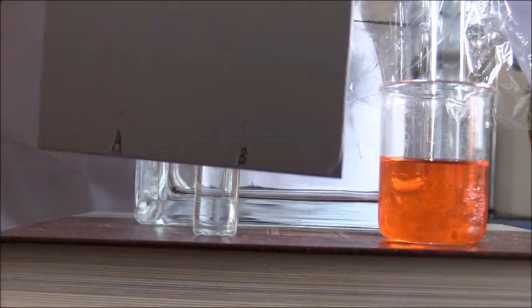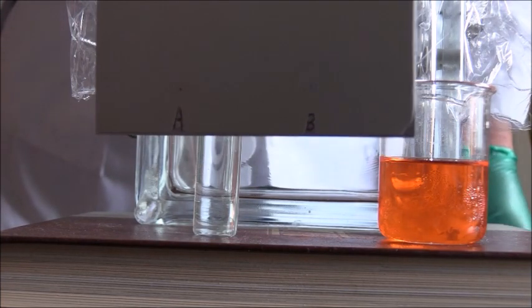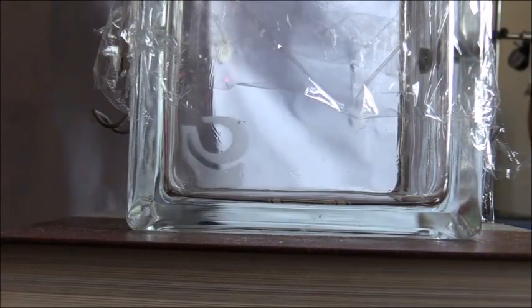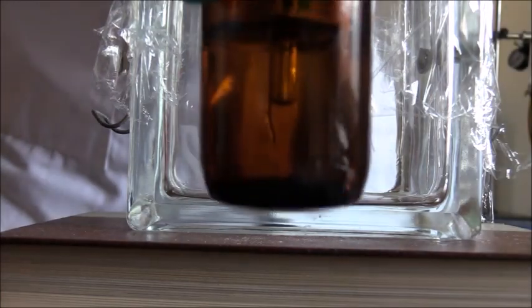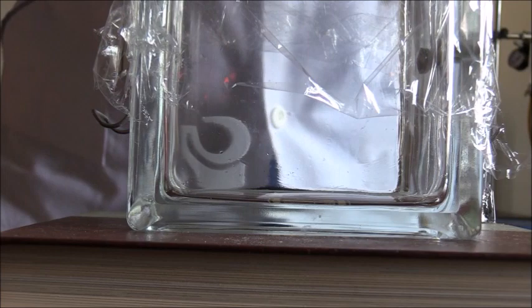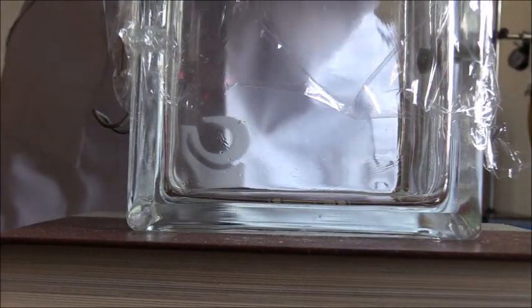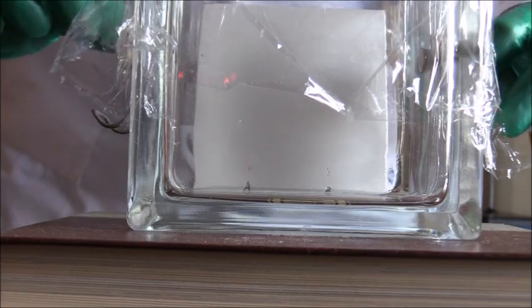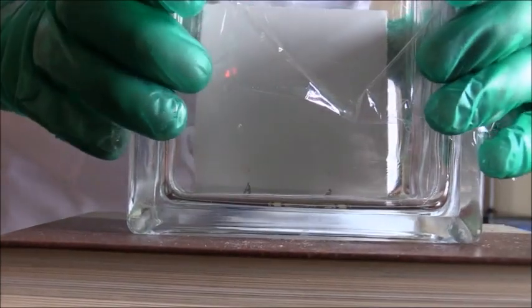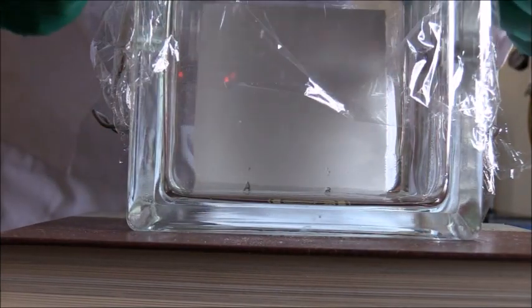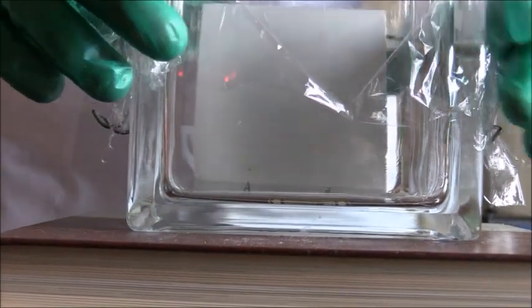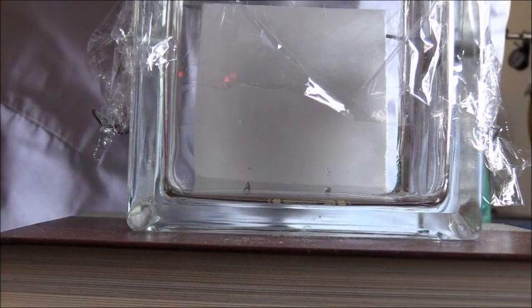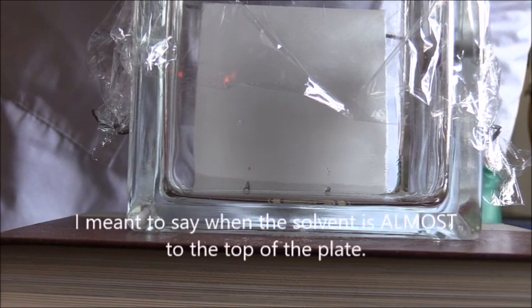And so now we're going to start the next part of the test, which is we're going to fill the chamber with solvent, and we're going to immerse our plate in the solvent. Okay, now that we have the chamber filled with our solvent, which is right here, this is our solvent. We're going to immerse the plate, the bottom edge, and we're going to quickly seal the chamber. And that should be good. We're going to do that, and we will come back when the solvent reaches the top of the plate.